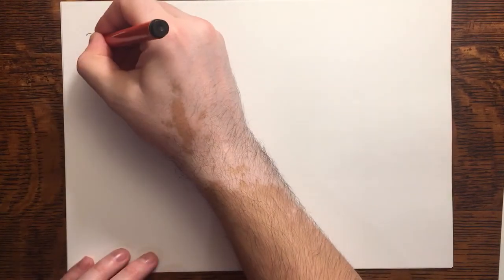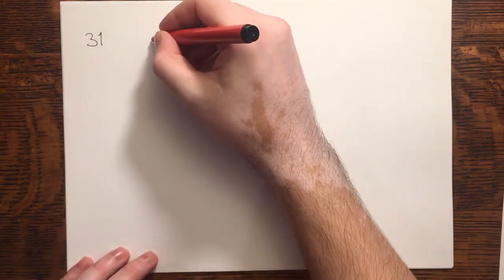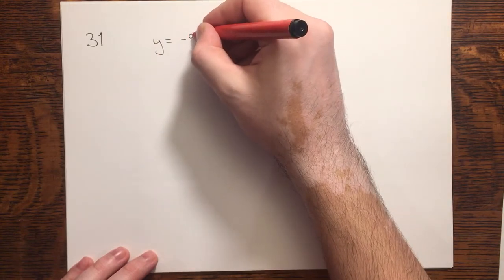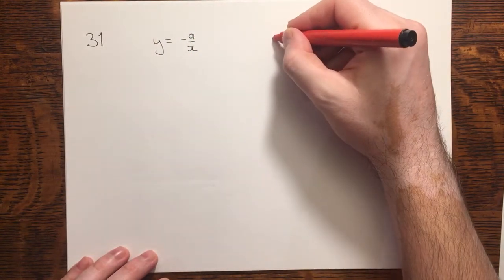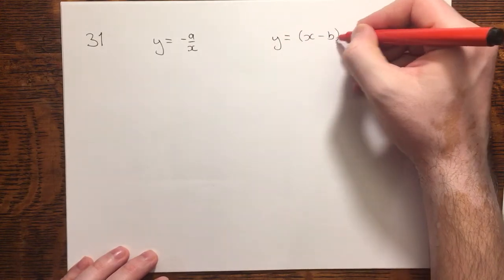In question 31 we're given two equations. The first equation y equals minus a over x and the second equation y equals x minus b all squared.